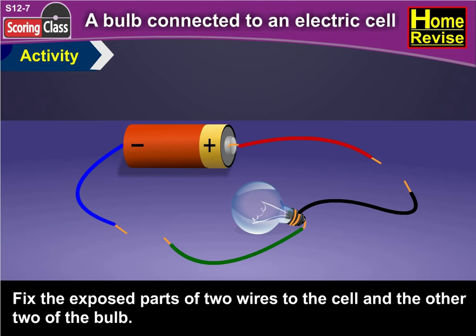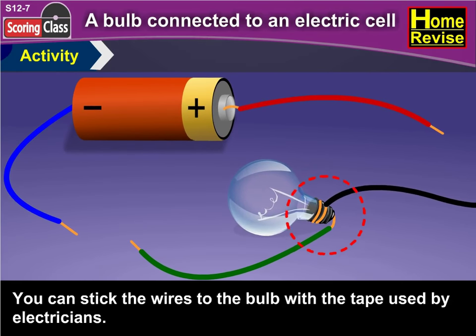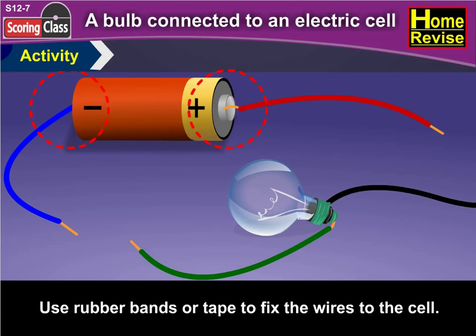Fix the exposed parts of two wires to the cell and the other two to the bulb. You can stick the wires to the bulb with the tape used by electricians. Use rubber bands or tape to fix the wires to the cell.